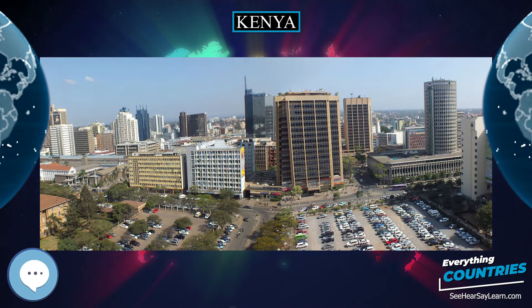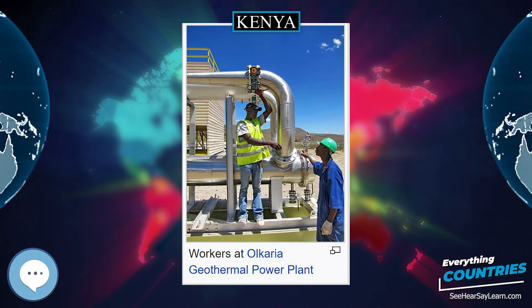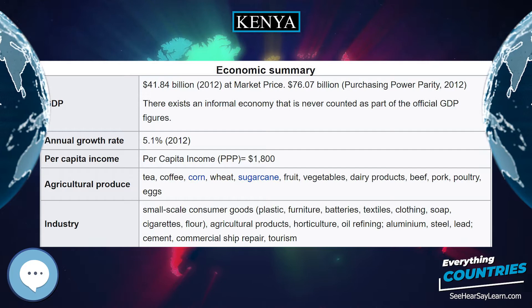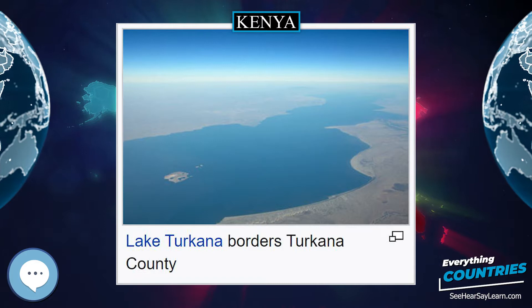The capture of Dedan Kimathi on October 21, 1956 in Nyeri signified the ultimate defeat of the Mau Mau and essentially ended the military offensive. During this period, substantial governmental changes to land tenure occurred. The most important of these was the Swynnerton Plan, which was used to both reward loyalists and punish Mau Mau. The first direct elections for native Kenyans to the Legislative Council took place in 1957.